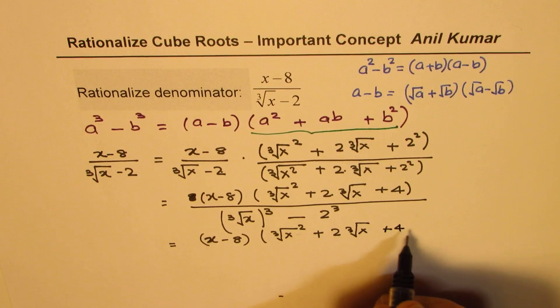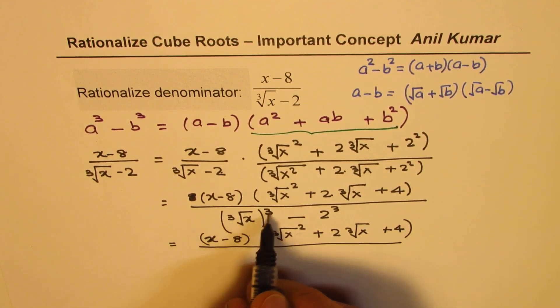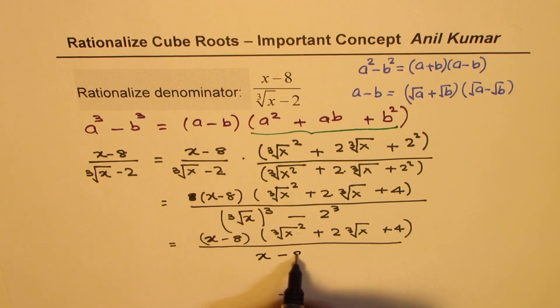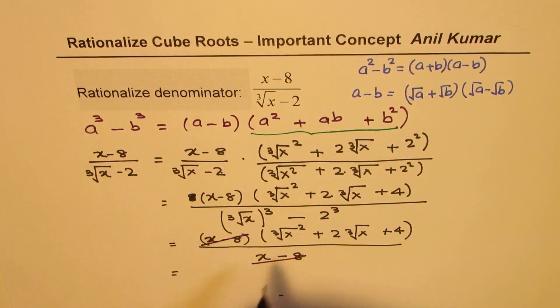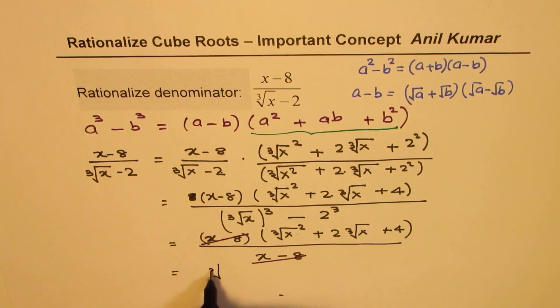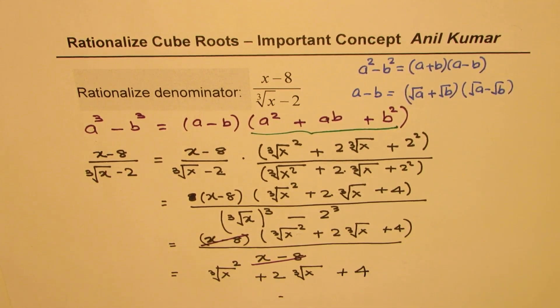So, I hope the concept is clear. So, let me just finish off with the last step. It will give us x minus 8 in the denominator. Now, this factor, x minus 8, can be cancelled. So, what you get as a result is cube root x square plus 2 times cube root x plus 4 as your answer.